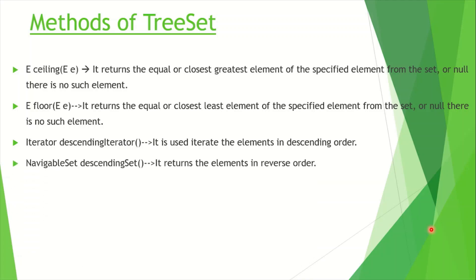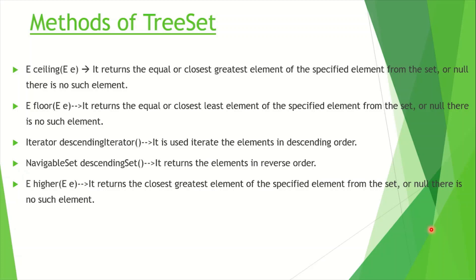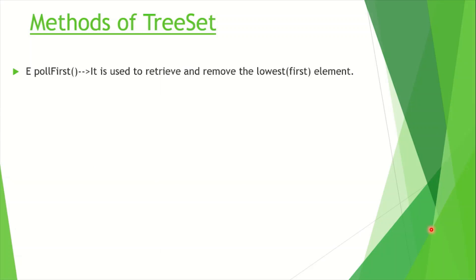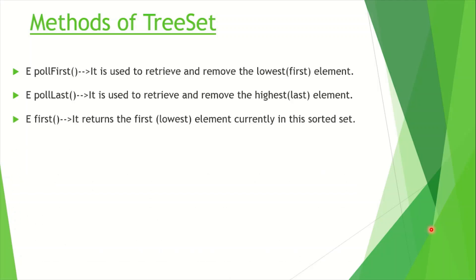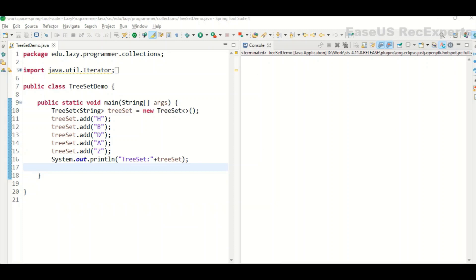Next is descending set — this returns a NavigableSet in reverse order. Next is higher — it returns the closest greatest element of the specified element. Similarly we have lower — it returns the closest least element of the specified element. Then we have pollFirst — if we want to retrieve the lowest element and remove it after retrieval we use pollFirst. Similarly pollLast removes the highest element after retrieval. If we just want to retrieve without removing, the first method returns the lowest element and the last method returns the highest element in the sorted set.